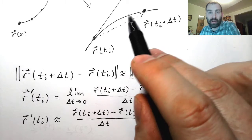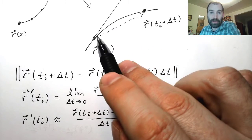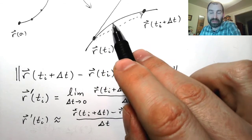Now the length of this vector is giving us the approximate distance between these two points, and we said that as these points get closer and closer together, the distance between the points better approximates the distance along the curve.